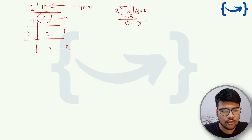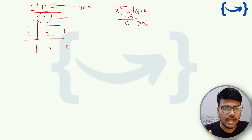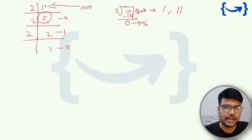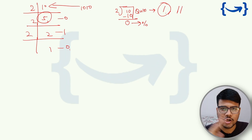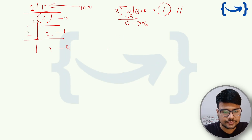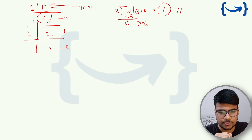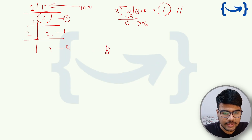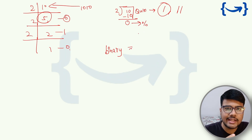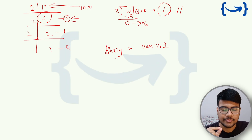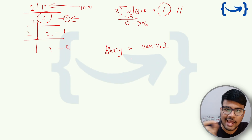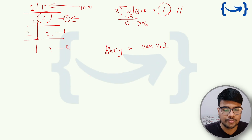For finding the remainder, I can use the modulus operator, which returns the remainder of any division. For the quotient, I can use integer division — in Python, use floor division (//) and in C++ or Java, use the divide operator. So for finding bits: binary = num % 2 gives the remainder, which is the bit we're looking for, and then we divide num by 2 to reduce it.